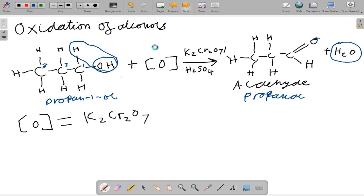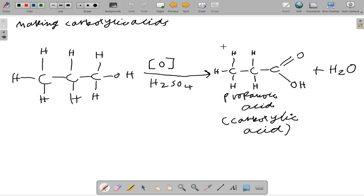If we heat it even stronger with acidified potassium dichromate, we can completely oxidize an alcohol to form a carboxylic acid. So we'll use propanol again. And if we have two oxidizing agents now, I will just correct that equation.